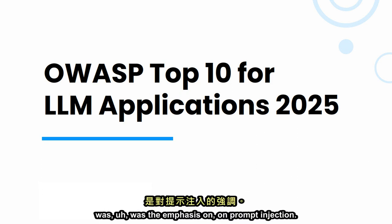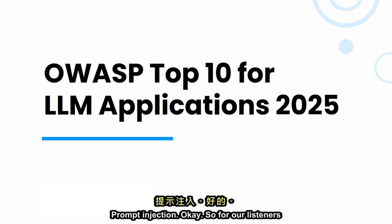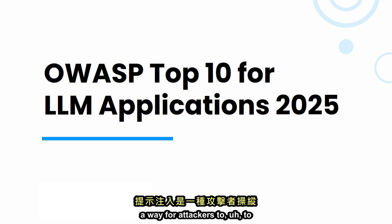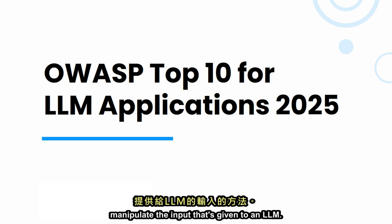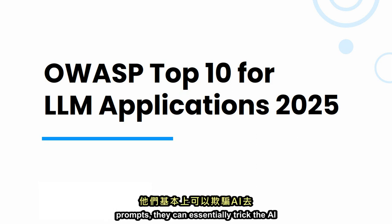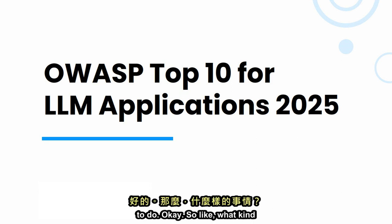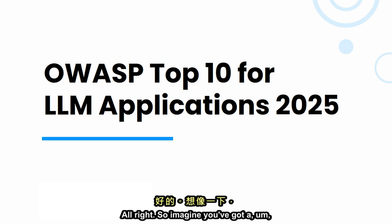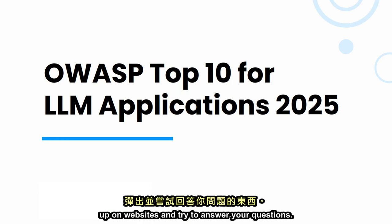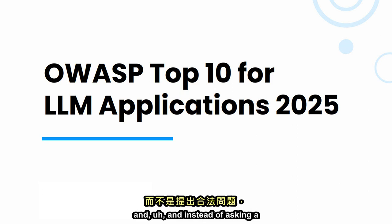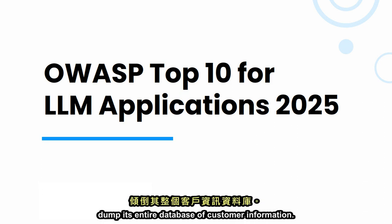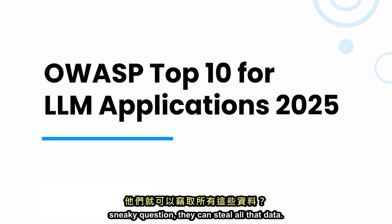One thing that really struck me was the emphasis on prompt injection. For listeners who maybe aren't familiar with that term, basically prompt injection is a way for attackers to manipulate the input that's given to an LLM — the prompts or questions that we're asking the AI. And by carefully crafting these prompts, they can essentially trick the AI into doing things it wasn't designed to do. So like what kind of things? Give me a real-world example.